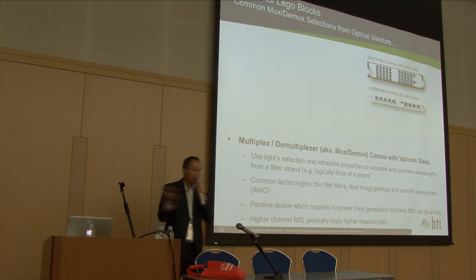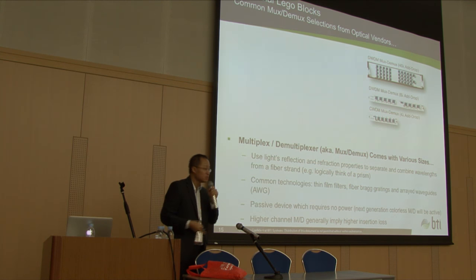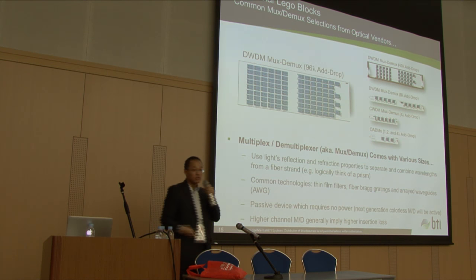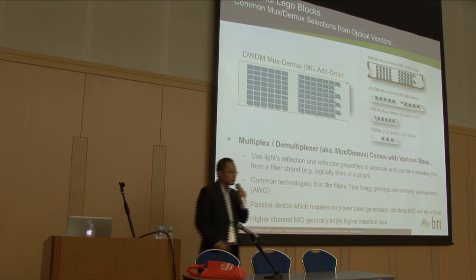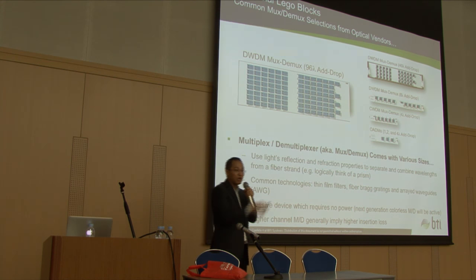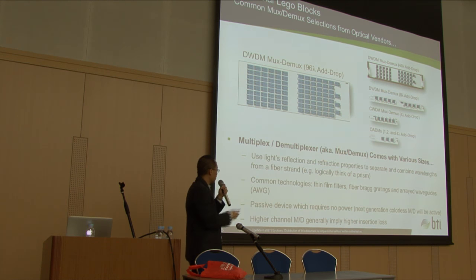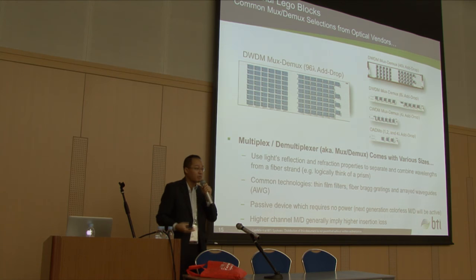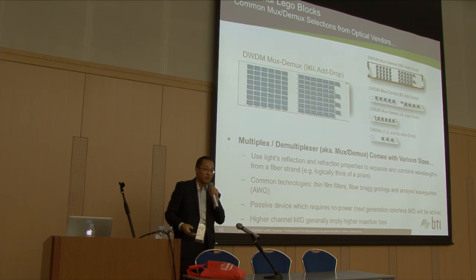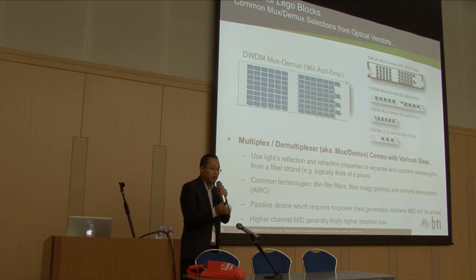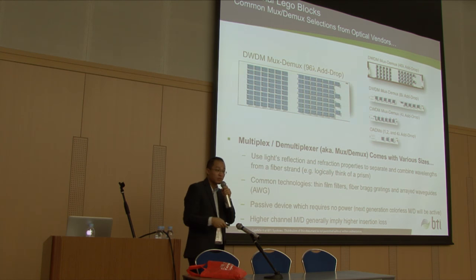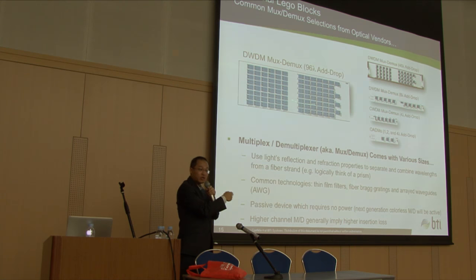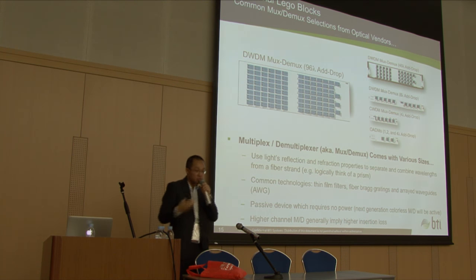In the market you'll find mux-dmux comes in different sizes — some can combine more channels, some less. Today, 96 channels is very common, meaning you can have 96 different lanes or highway lanes to multiplex onto a pair of fiber. Most, if not all, mux-dmux today is a passive device requiring no power — it's not active. It just virtually divides your fiber pair into multiple links. One lane can be 10 gig, one lane 100 gig, one lane 40 gig — depending on vendor implementation.